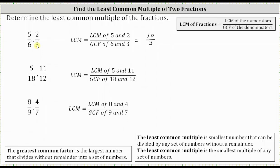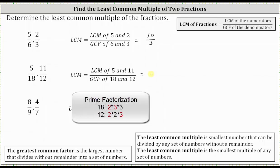Next, we're going to find the least common multiple of 5/18 and 11/12, which is equal to the fraction where the denominator is the greatest common factor of 18 and 12, and the numerator is the least common multiple of five and 11. So the greatest common factor of 18 and 12 is the largest number that divides both 18 and 12 without remainder, which would be six.